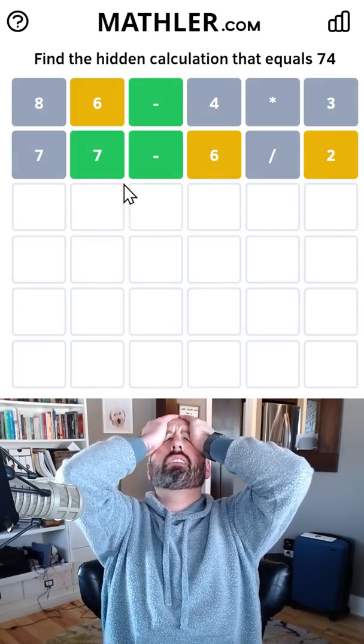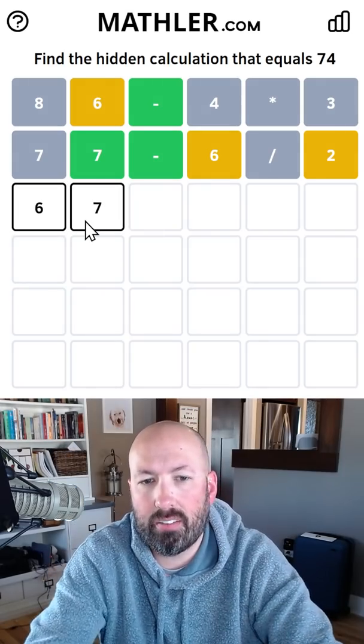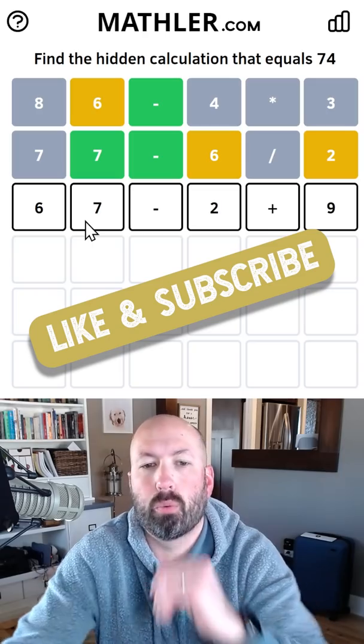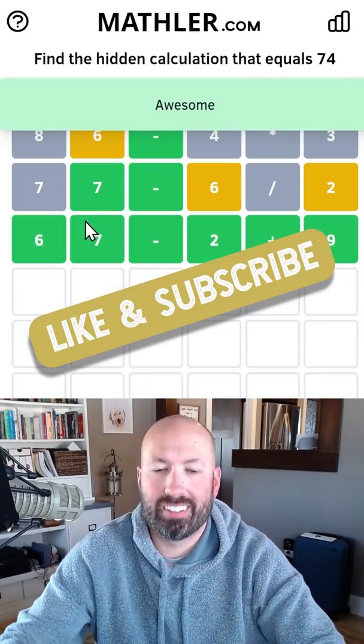Oh, it's subtract and then add. It could be 67, subtract 2 plus 9. That would work, wouldn't it? Okay, that's what it was.